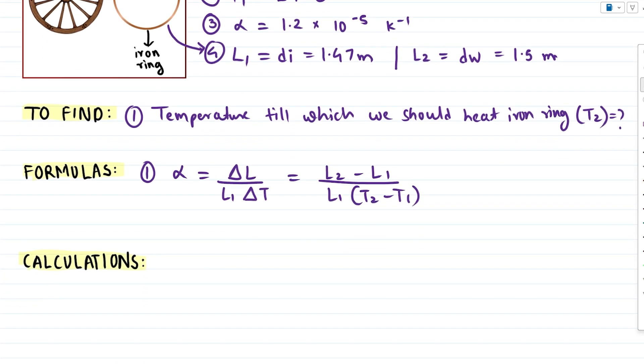The formula we have already written is good when we have to find alpha. So let's now rearrange this formula to get direct substitution for T2. If I rearrange, T2 can be written as L2 minus L1 upon L1 into alpha, and if T1 goes to RHS it would be plus T1.